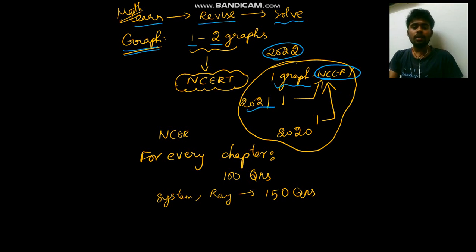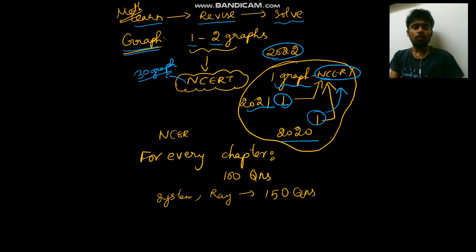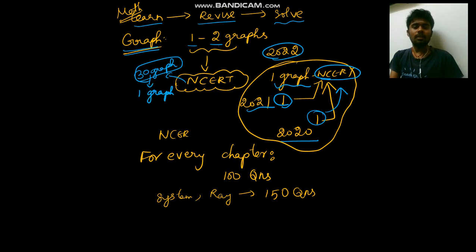One graph directly from the NCERT book was asked in 2022. In 2021, one question was asked which is also directly from the NCERT. In 2020, one graph question was asked which was also directly from the NCERT. In the NCERT book there are only 30 graphs for the whole 12th standard, and those 30 graphs you must read so that you can easily attempt the graph question.